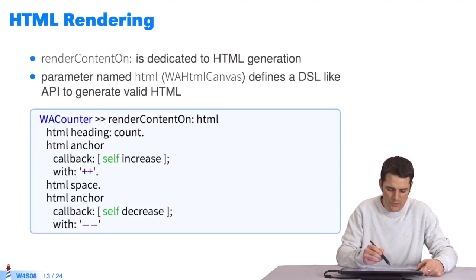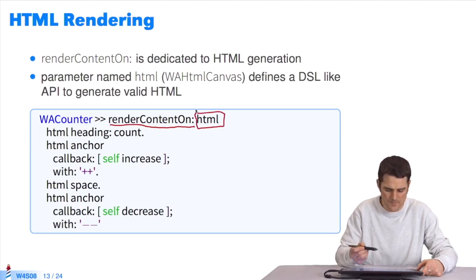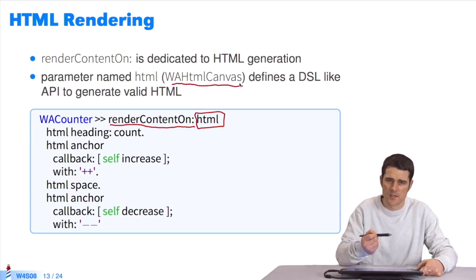Here's the example with the addition of renderContentOn to the counter class. I use this parameter, a conventional Pharo object. It's an instance of the class WAHTMLCanvas supplied by Seaside.